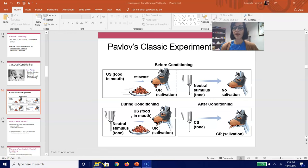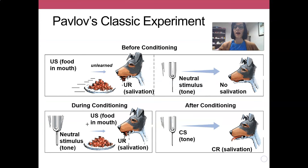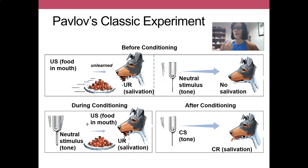Hey folks, welcome back. So last time we were talking about Pavlov's very famous classical conditioning experiment, in which he had a dog become trained to salivate to a tone — sometimes it's a bell — but in either case, we're taking a neutral stimulus that previously did not produce any salivation on its own, and by repeatedly pairing it with food, we can train a dog to salivate to the tone on its own.